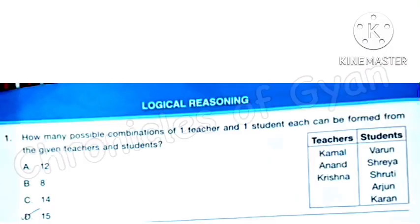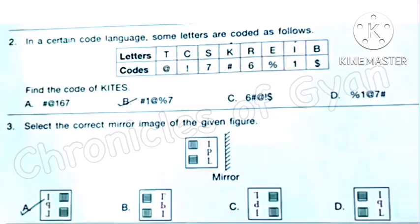Question 1: How many possible combinations of one teacher and one student each can be formed from the given teachers and students? In the teachers column there are 3 teachers and there are 5 students, so we have to multiply 5 into 3. That is 15. Option D is the correct answer.